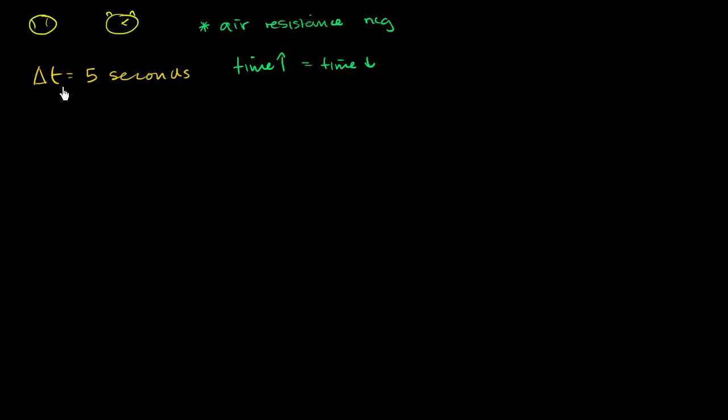The first thing we can do is we can say, look, if the total time in the air was five seconds, that means that the change in time to go up during the first half of the ball's time in the air is going to be 2.5 seconds. Which tells us that over this 2.5 seconds, we went from our initial velocity, whatever it was, to our final velocity, which is a velocity of 0 meters per second.